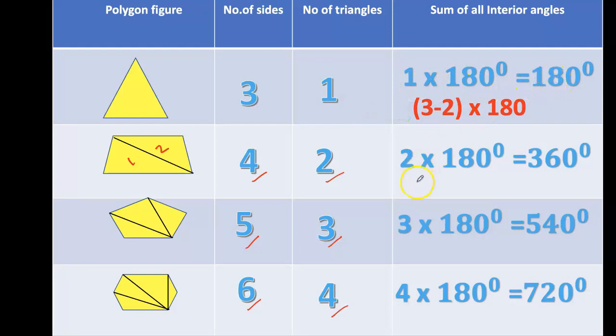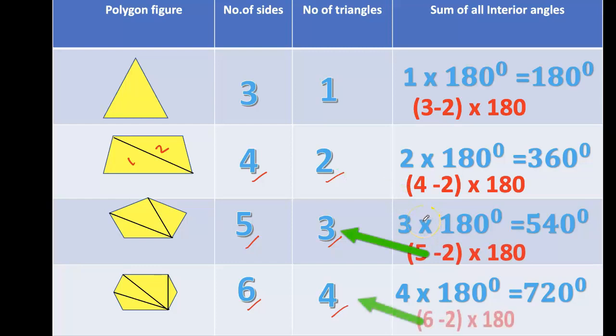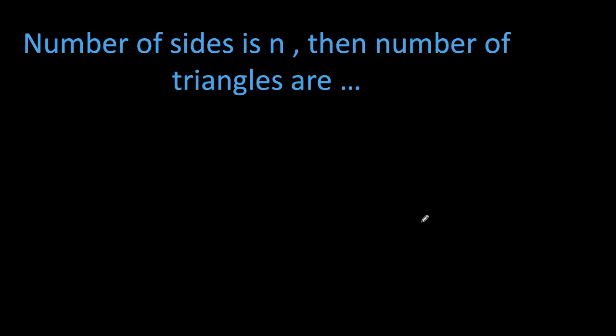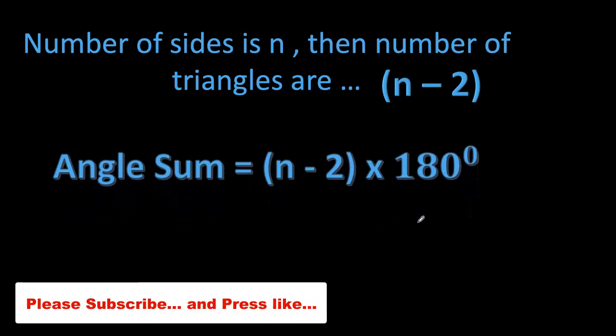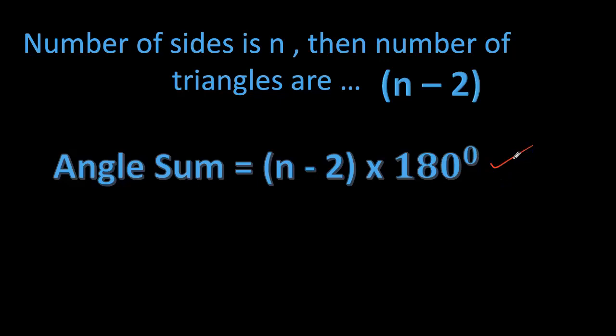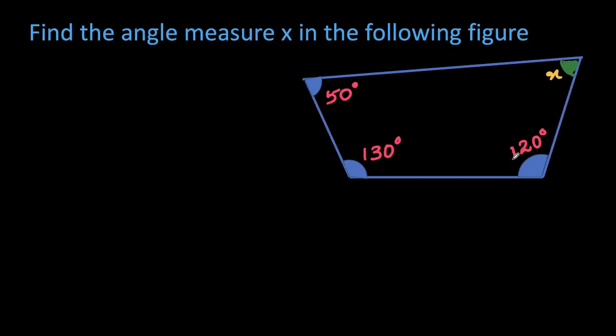Can you tell, if number of sides is n, then the number of triangles are n minus two? Then angle sum equals to (n - 2) × 180. So sum of the interior angles of a polygon is (n - 2) × 180.